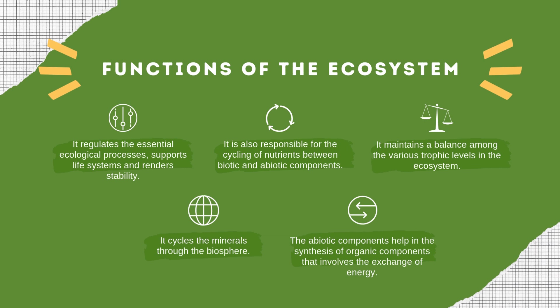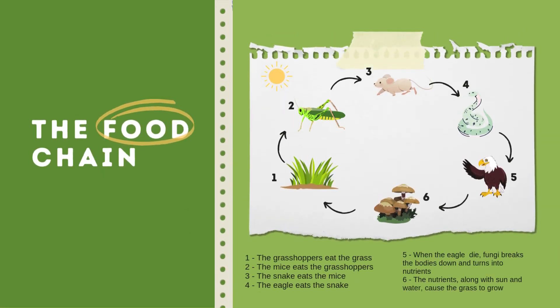Coming to the functions of the ecosystem. First, it regulates the essential ecological processes, supports life systems, and renders stability. Second, it is also responsible for the cycling of nutrients between biotic and abiotic components. Third, it maintains a balance among the various trophic levels in the ecosystem. Fourth, it cycles the minerals through the biosphere. Fifth, abiotic components help in the synthesis of organic components that involves the exchange of gases.